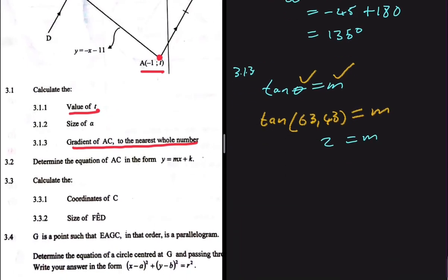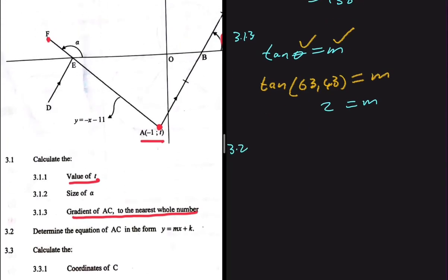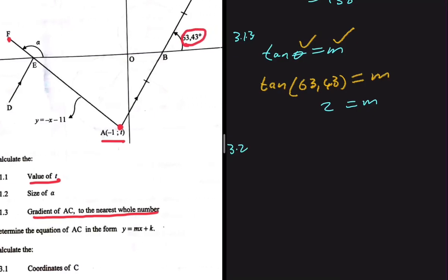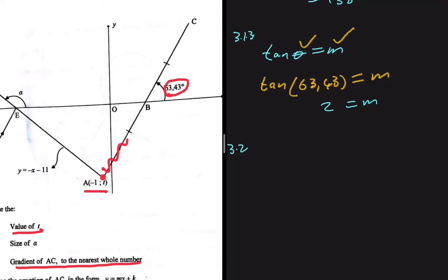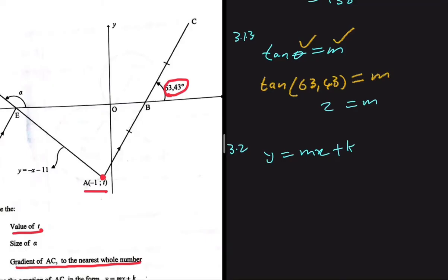For 3.2, we determine the equation of AC in the form y equals mx plus k. AC is a straight line, and the general form is y equals mx plus some constant k, as the question requires. We already have the gradient from 3.1.3, so we can write y equals 2x plus k. Now we just need to find k.